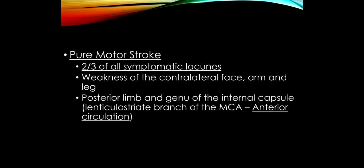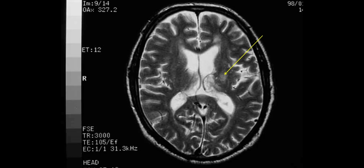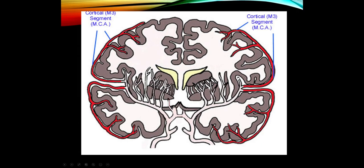The blood vessel responsible is the lenticulostriate branch of the middle cerebral artery. This supplies the motor fibers in the posterior limb of the internal capsule, as well as the genu of the internal capsule. Here on MRI we can see what a symptomatic lacunar stroke looks like. The middle cerebral artery comes off the internal carotid and supplies the lateral hemisphere, but on the way through the sylvian fissure it gives off penetrating lenticulostriate branches — occlusion of one of these gives the pure motor stroke.